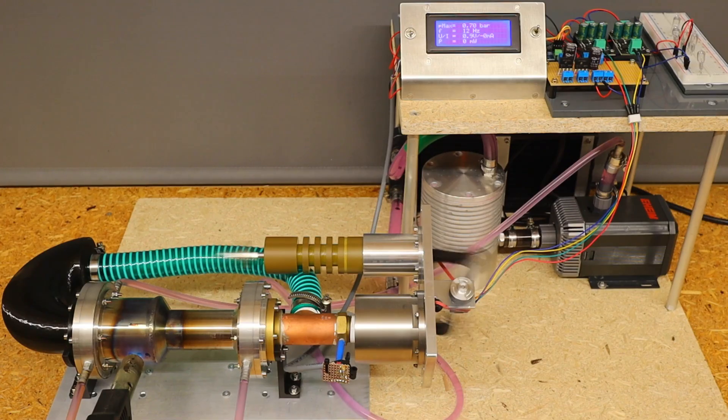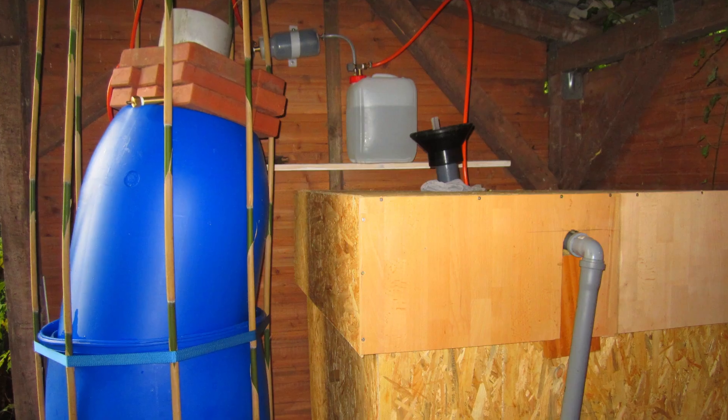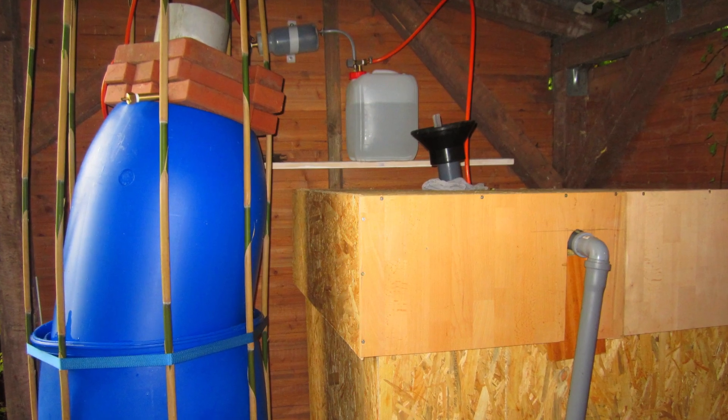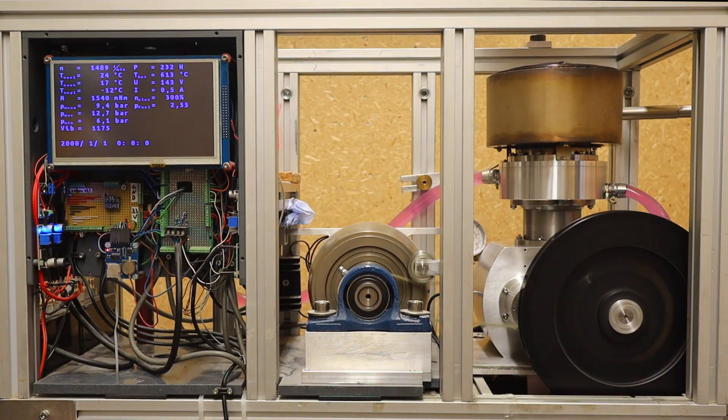I generate our own electricity and heat using self-produced biogas with my homemade engines to support the solar plant during periods of low sunshine. My conventional Stirling engines are powerful enough, but unfortunately they are too complex, require a lot of maintenance, and are therefore too expensive.